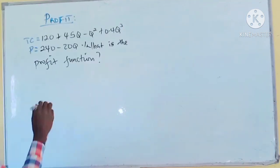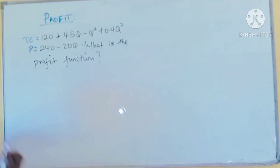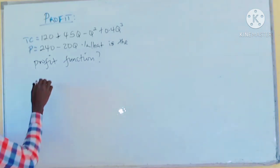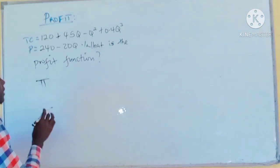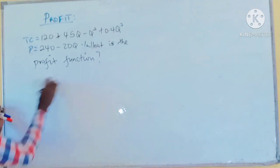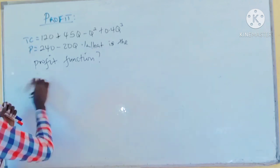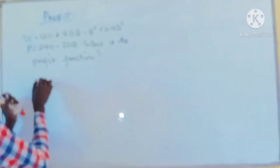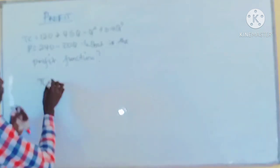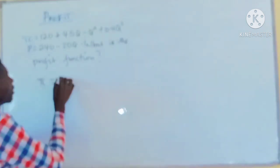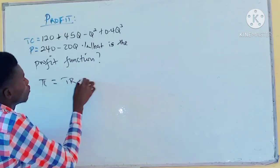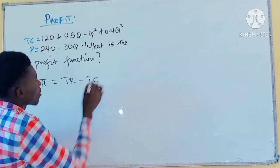First of all, we need to know what profit is. To find profit, we represent profit with a specific sign. Profit is total revenue minus total cost.